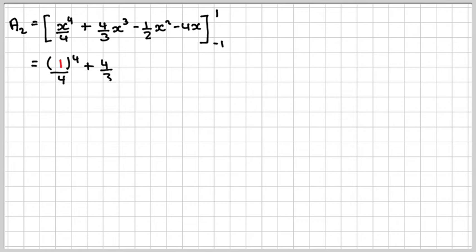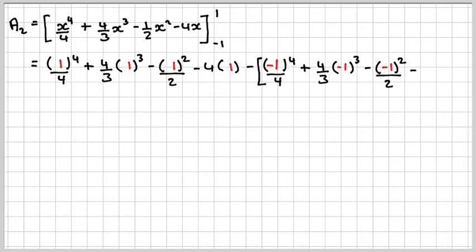So substituting in 1, the top one first, minus the other one which is minus 1. So it's really important that you do use brackets when substituting in, particularly if it's a negative number.